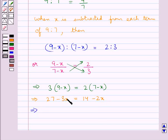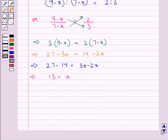Now, we transpose this minus 3x to the right hand side and this 14 to the left hand side. We have 27 minus 14 is equal to 3x minus 2x, or 13 is equal to x, or we can say that x is equal to 13.